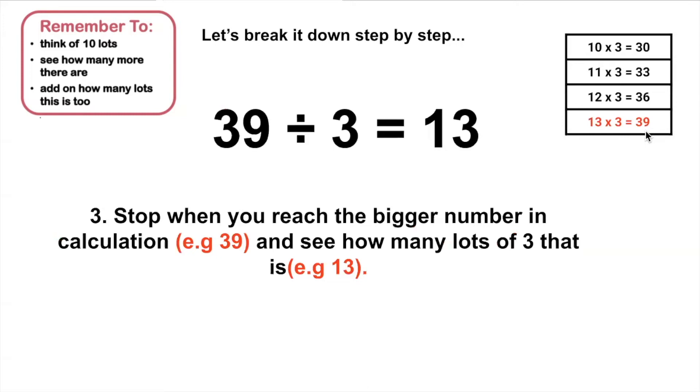I'm going to stop when I reach my 39, because that is the bigger number in the calculation. And it's going to show me how many lots of 3 that is. And in the table it shows me there are 13 lots of 3 that make 39. So that would make my answer 13.